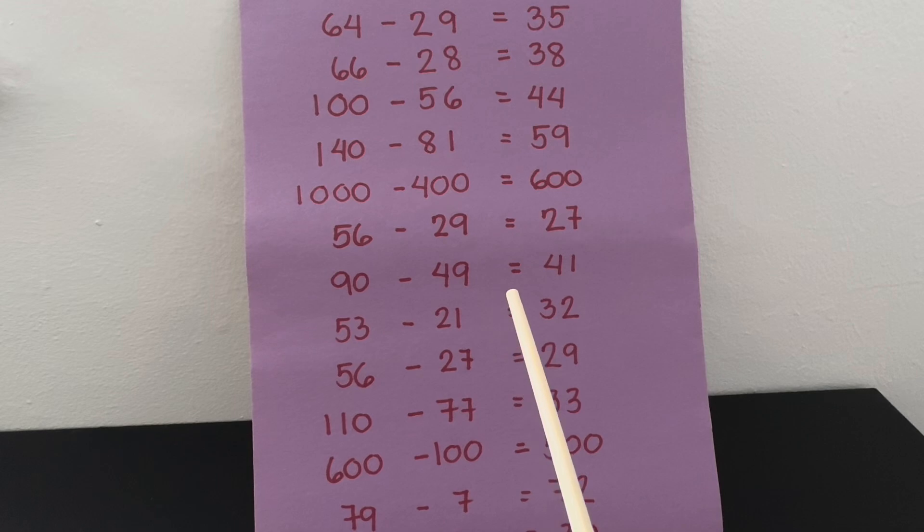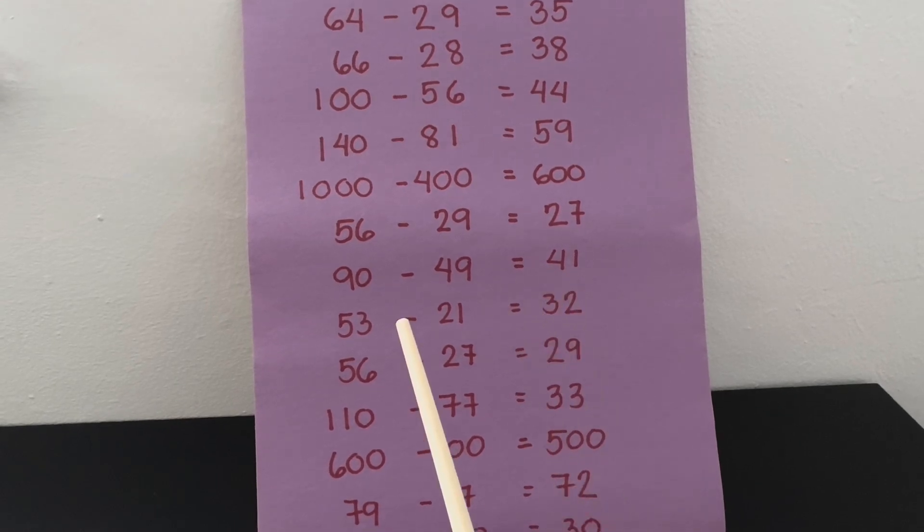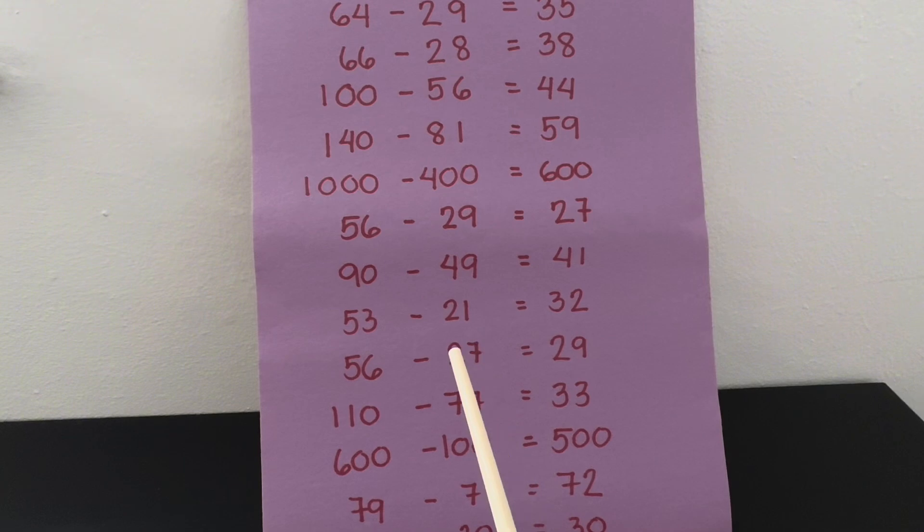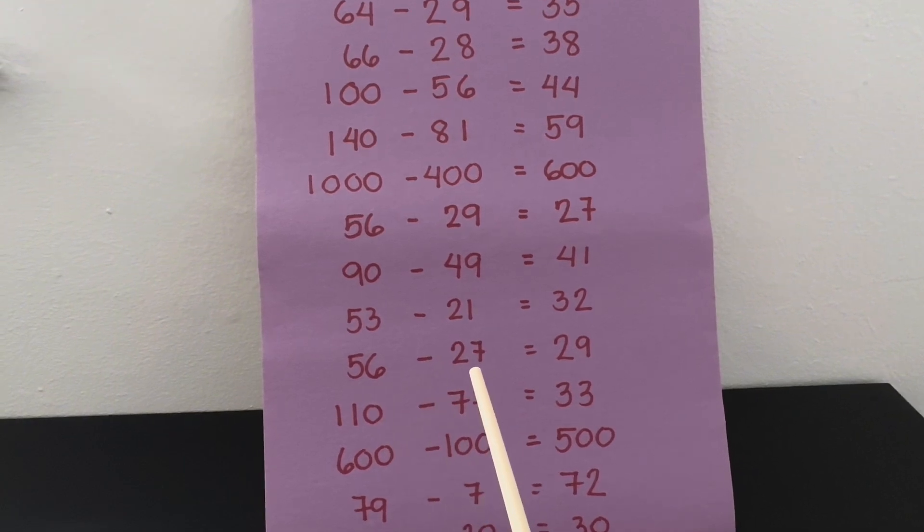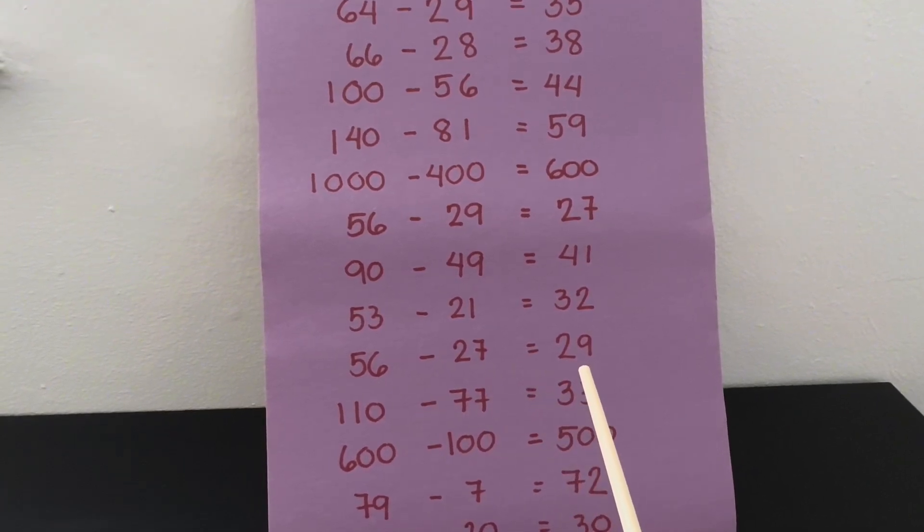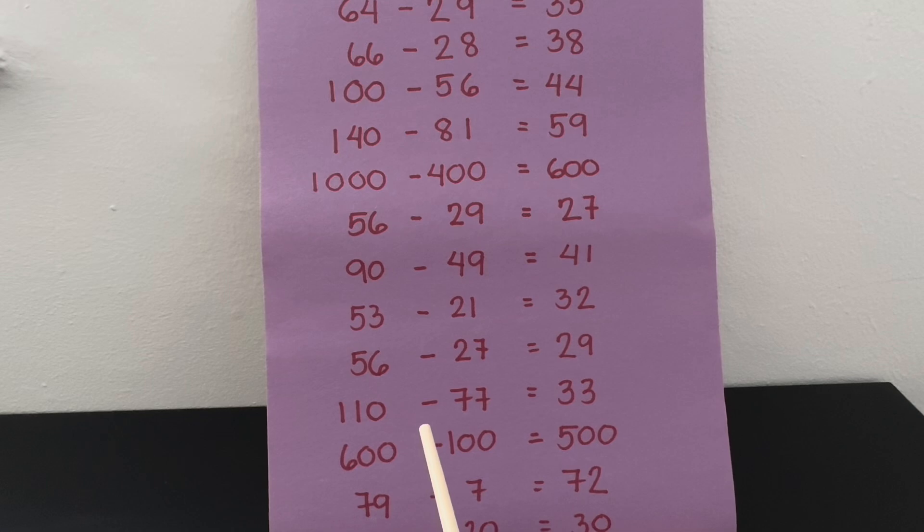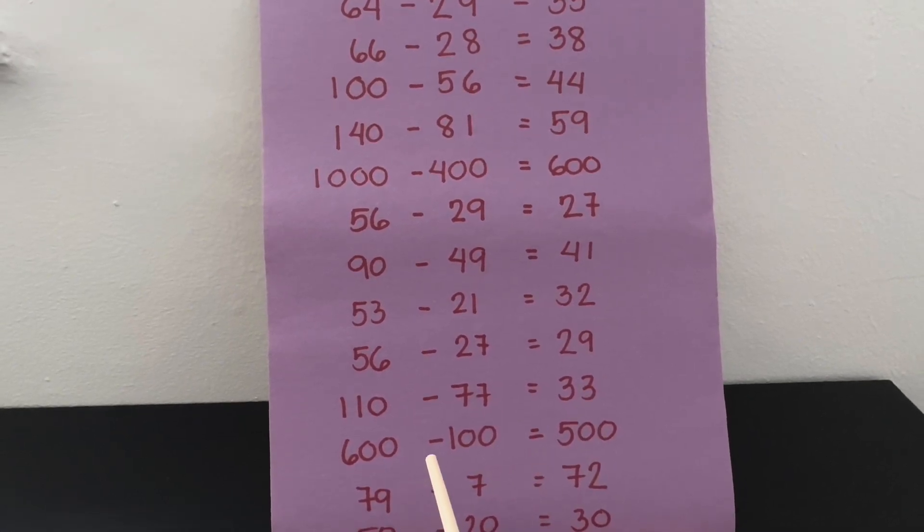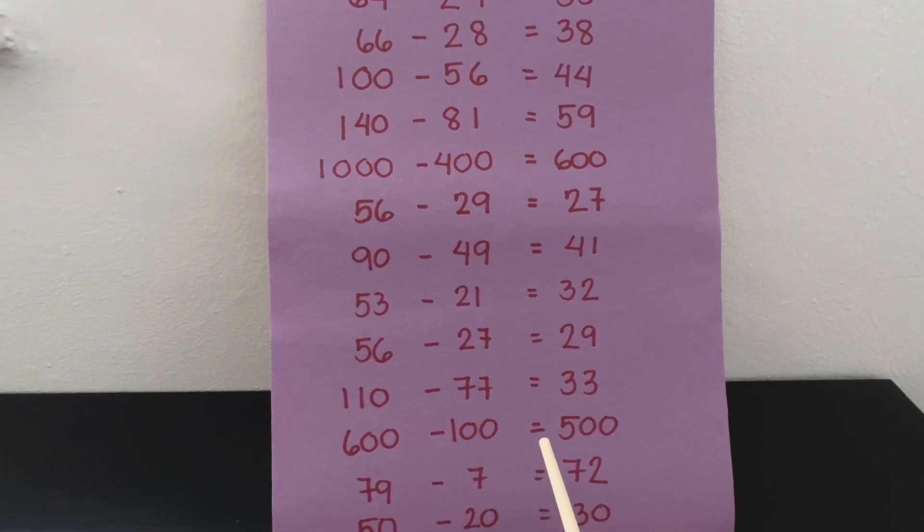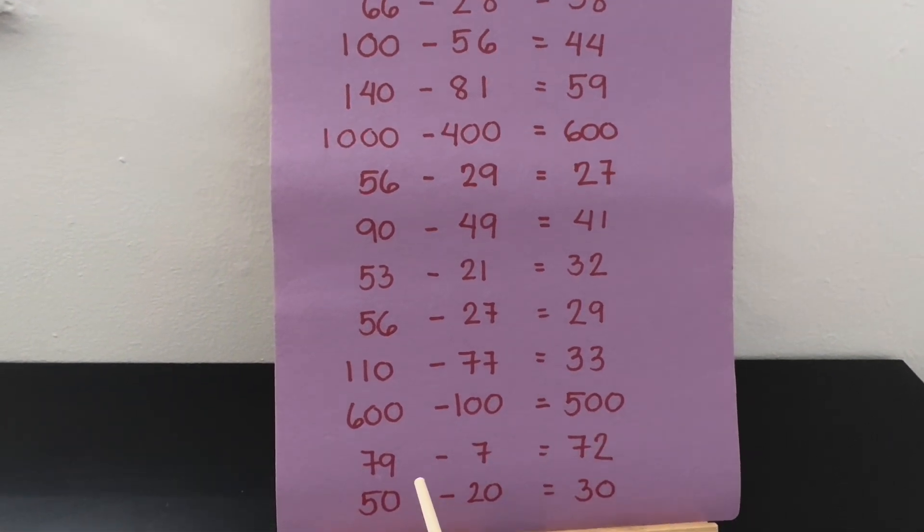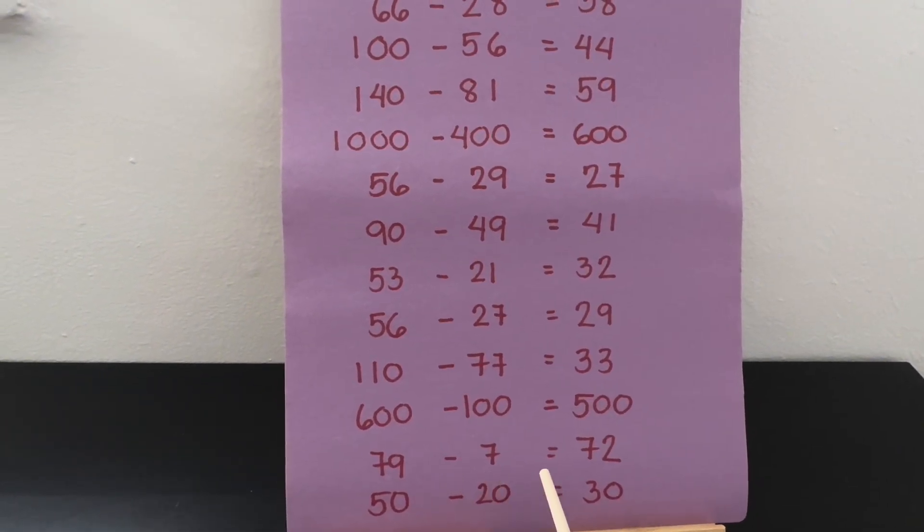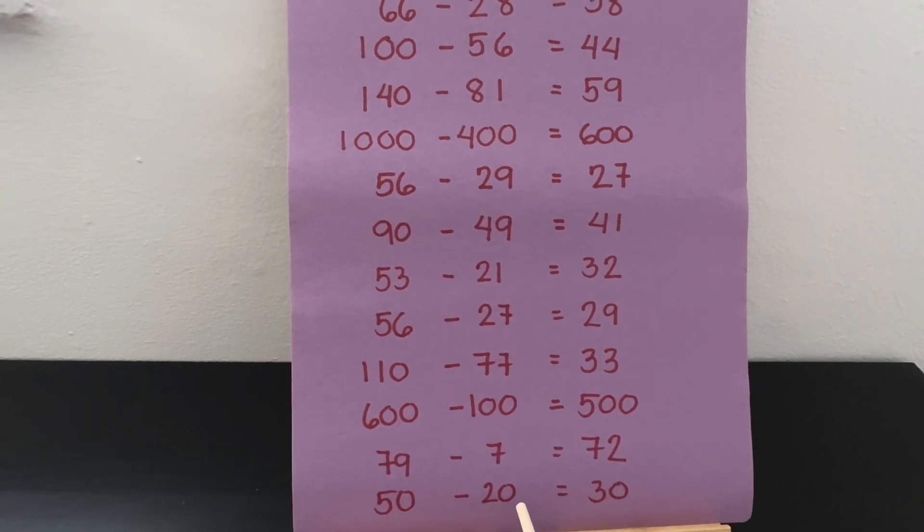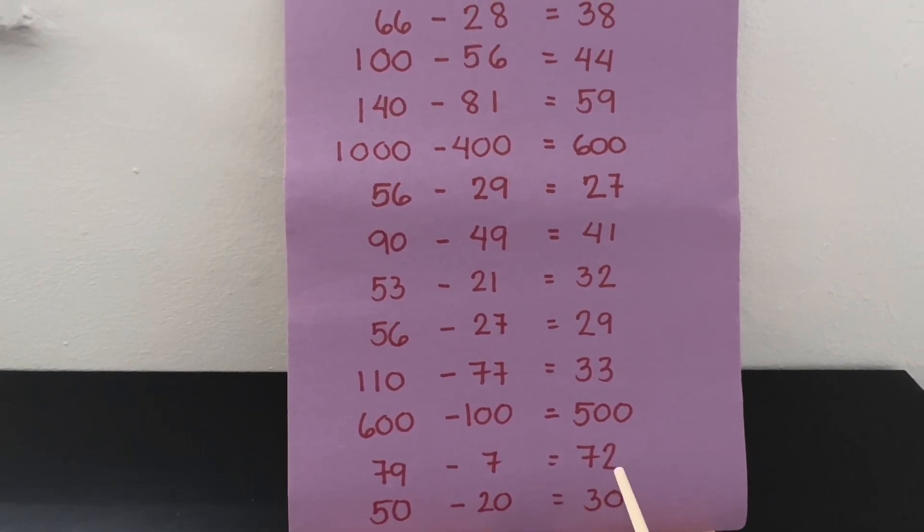90 minus 49 equals 41. 53 minus 21 equals 32. 56 minus 27 equals 29. 110 minus 77 equals 33. 600 minus 100 equals 500. 79 minus 7 equals 72. And lastly, 50 minus 20 equals 30.